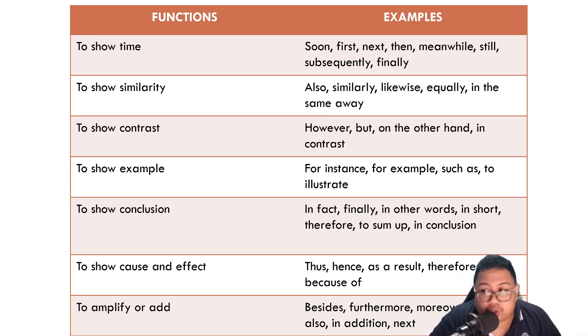So the first one is to show time. You use soon, first, next, then, meanwhile. To show similarity, maybe point A and point B are similar. So similarly, likewise. To show contrast, maybe the difference. A and B may be different. So you should use however, but, on the other hand, in contrast.